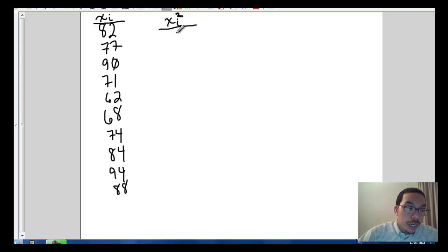So 82 squared gives us 6724. 77 squared is 5929. 90 squared is 8100. 71 squared is 5041. 62 squared is 3844.